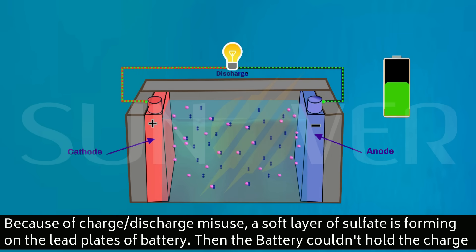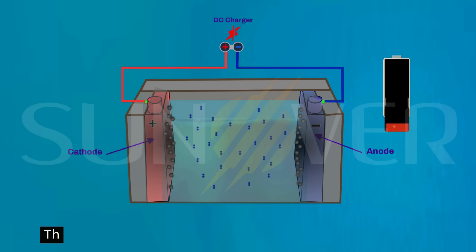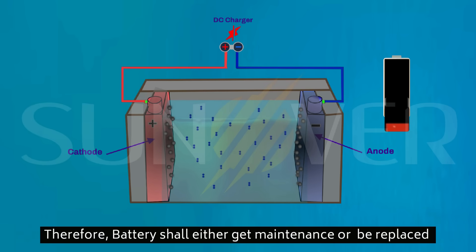With charge-discharge misuse, more sulfate is deposited and a soft layer of sulfate is formed on lead plates inside the battery, which makes the battery unable to hold the electrical charge. Therefore, the battery should have maintenance or be replaced with a new one.